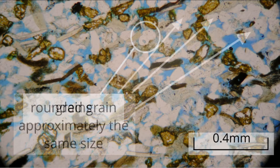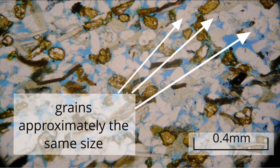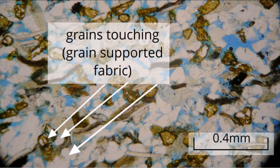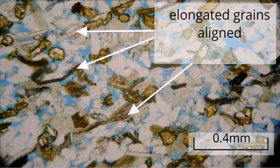Grains are approximately the same size and so the rock may be described as well sorted. The grains are touching so the rock has a grain supported fabric. Some of the elongated grains are aligned and form layers through the sedimentary rock, indicating sorting by grain shape during deposition of the original sediment.